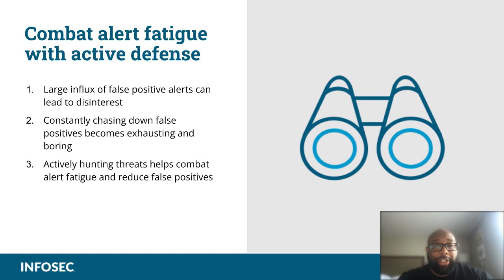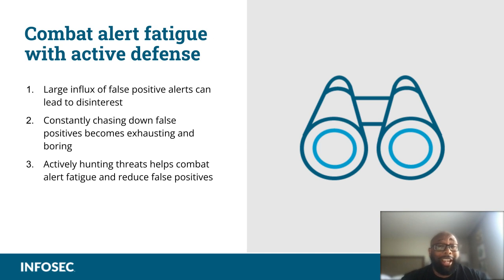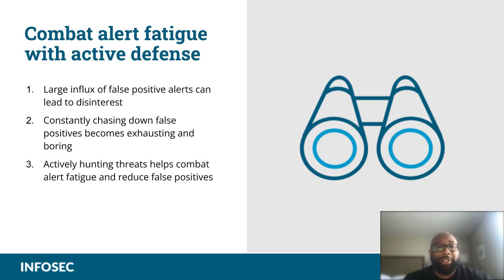Part of what we try to do in threat hunting is drive that detection delta number down — the time between when you're compromised and when you know about it. The sooner you know about it, the better your response position. We also do this to combat alert fatigue with active defense. Large influxes of false positives can lead to disinterest — some of the more significant data breaches in history happened because of alert fatigue, where people started ignoring alerts like the boy who cried wolf. Actively hunting threats helps combat this and can also help reduce false positives.